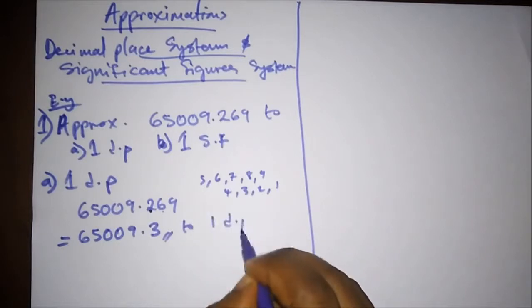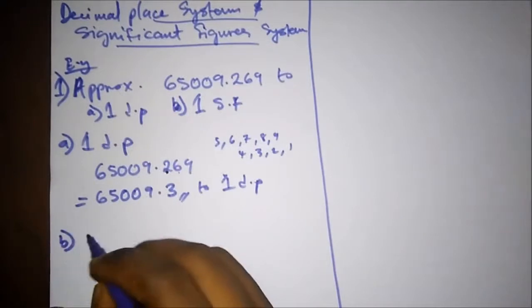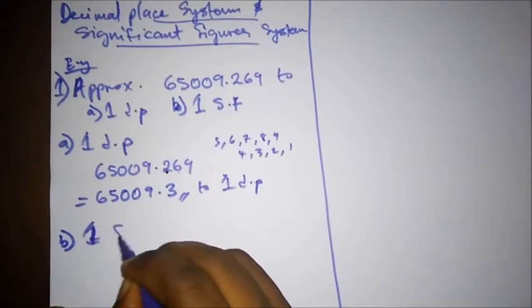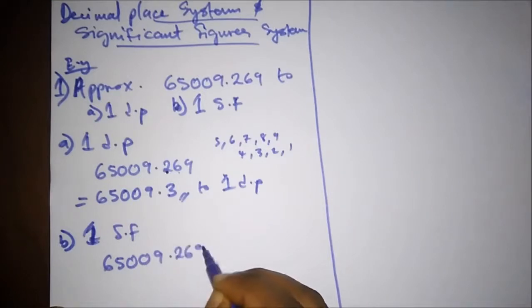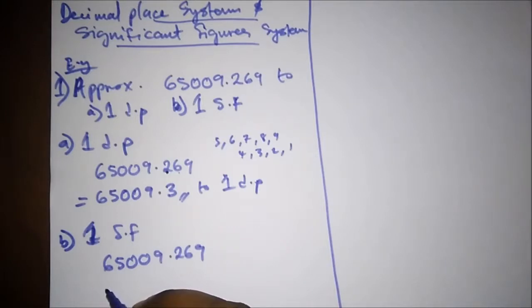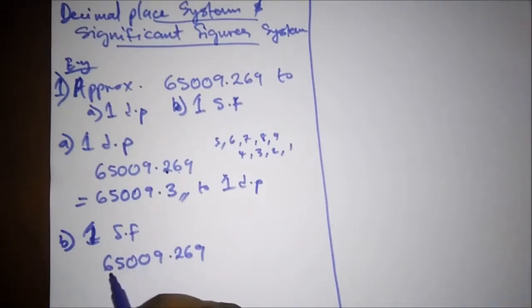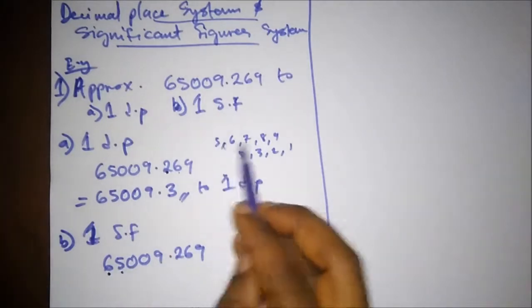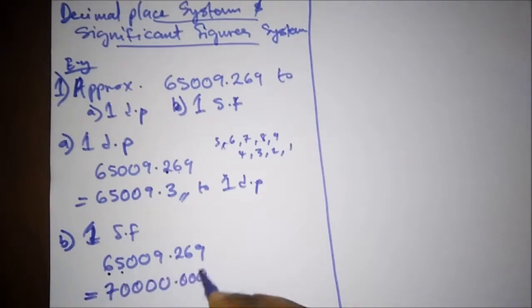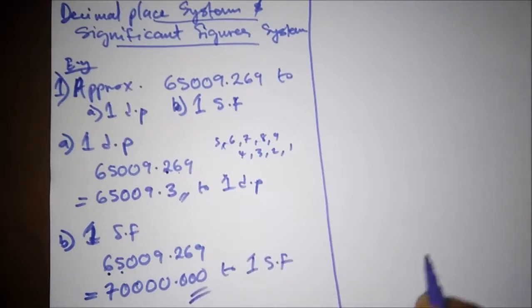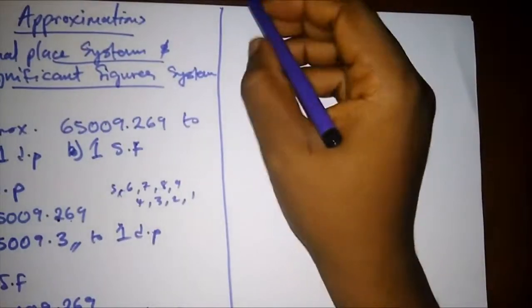Now part (b): convert to one significant figure. In significant figures, we do not start from zero — we start from the first non-zero number. So we start from the digit 6. The next number after 6 is 5, and since 5 qualifies for rounding up, we add one to 6, giving us 7. Our answer to one significant figure is 70000.0.